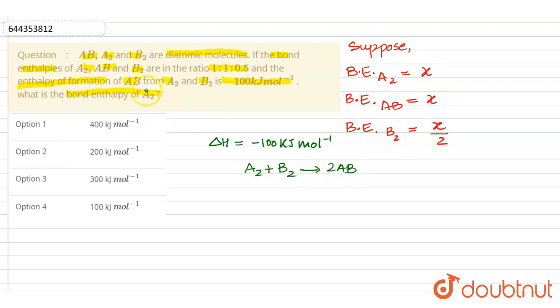This is already told here that formation of AB is happening from A2 and B2. Now we will see that the enthalpy - enthalpy is total enthalpy received is enthalpy of reactant minus enthalpy of product.